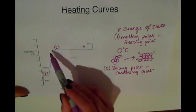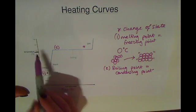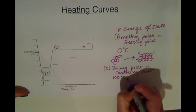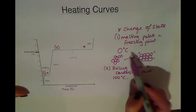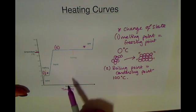So this change of state here is the boiling point or condensing point which at water happens at 100 degrees C. Now the 0 degrees C and 100 degrees C are only applicable to water.